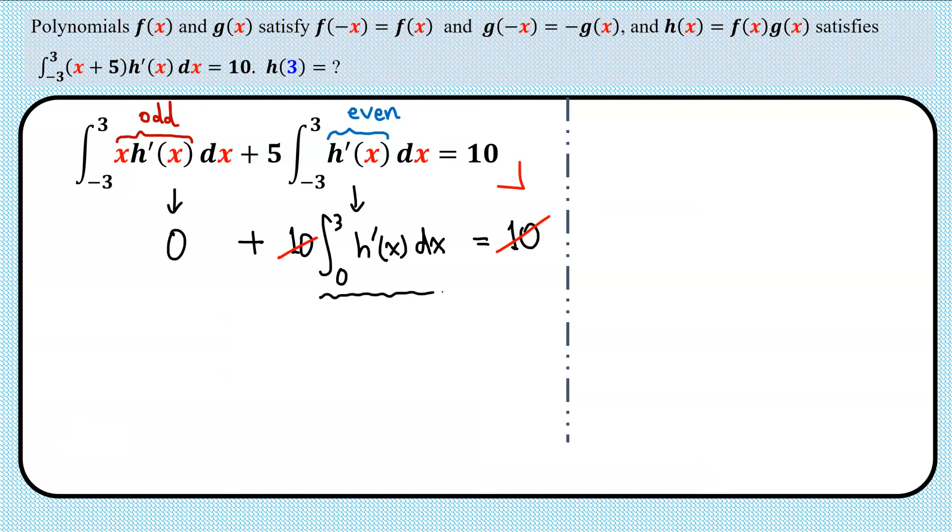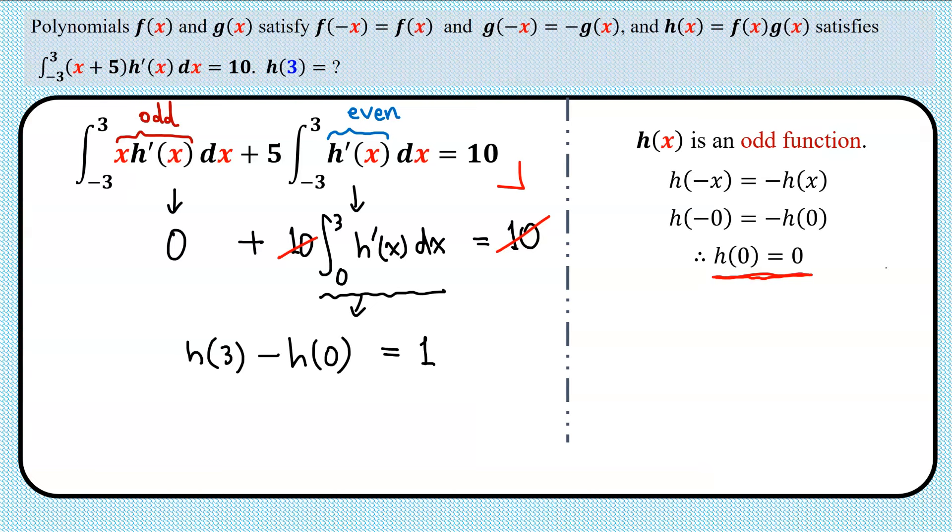And this integral is simply equal to h(3) - h(0). So we have h(3) - h(0) equals 1. And here's one more thing about odd functions. Because h(x) is an odd function, it satisfies h(-x) = -h(x). So if we substitute x = 0, we obtain h(0) = 0. In other words, the graph passes the origin.